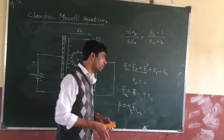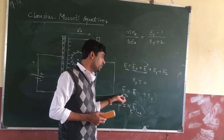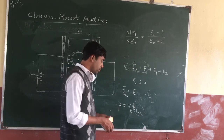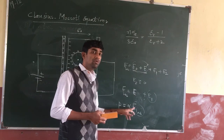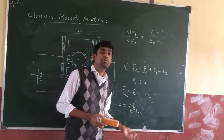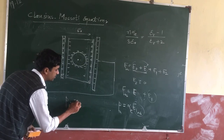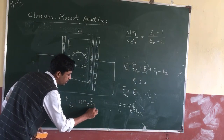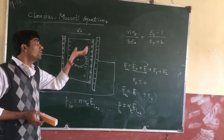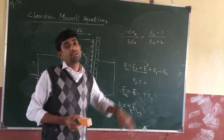Substituting E2 equals zero, we get E_local equals E (net electric field) plus E1. First, find the value of E1, then substitute it to get the local electric field. After obtaining E_local, substitute it into the polarization equation. The induced dipole moment is proportional to the local electric field, with the proportionality constant being the polarizability constant alpha_E. If there are N molecules per unit volume, then polarization P equals N alpha_E times E_local. Substituting and rearranging all these values gives you the Clausius-Mossotti equation.